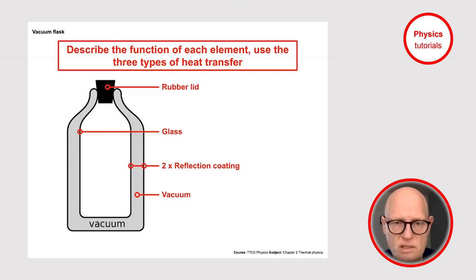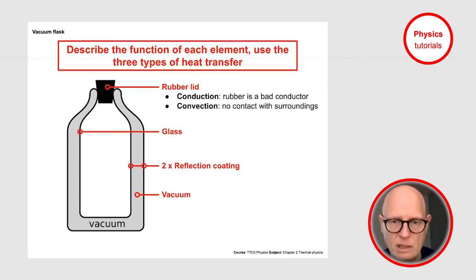Okay, so what is the function of each element used in this vacuum flask? First of all, the rubber lid. The rubber lid prevents conduction and convection from happening. Conduction, because rubber is a bad conductor of heat energy. If this rubber lid was made of metal, then the heat loss through conduction would be much bigger. But it's not, it's made of rubber.